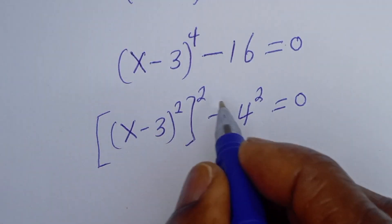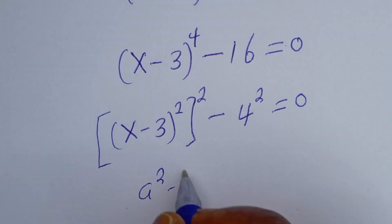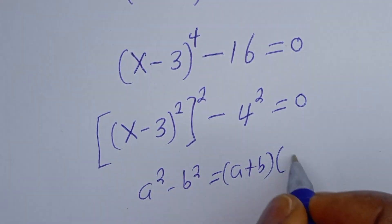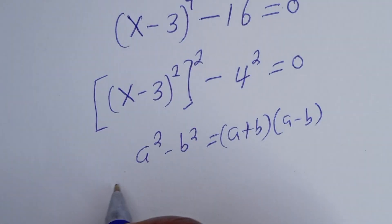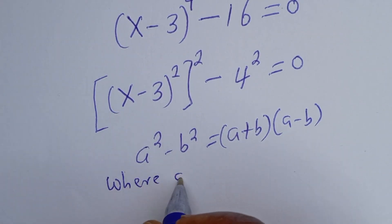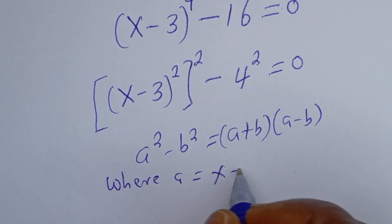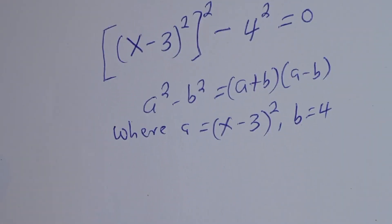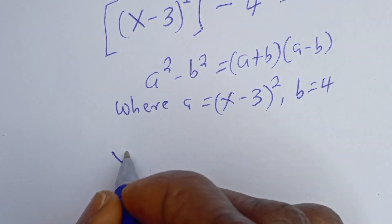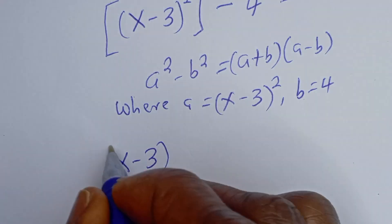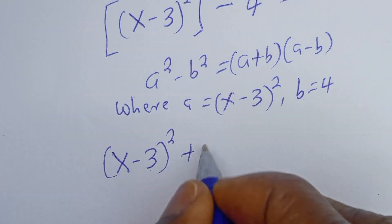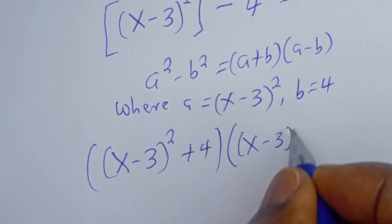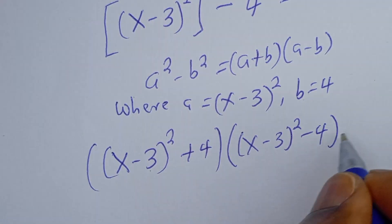This is in the form of a difference of perfect squares. If you have A squared minus B squared, this is equal to A plus B times A minus B, where A is equal to S minus 3 squared and B is equal to 4. Substituting, we have S minus 3 squared plus 4, times S minus 3 squared minus 4, is equal to 0.